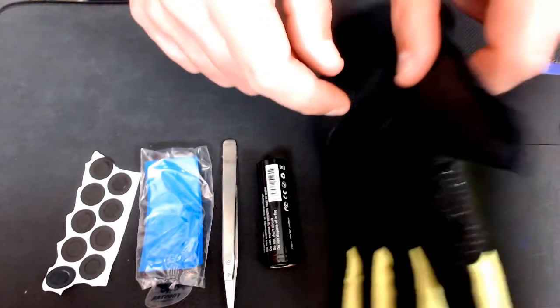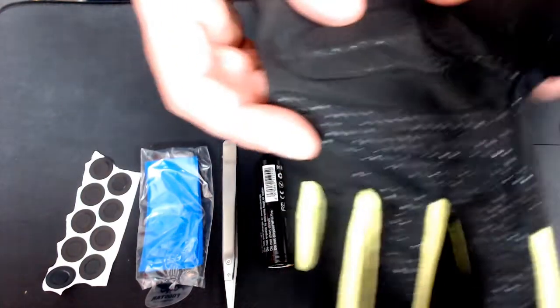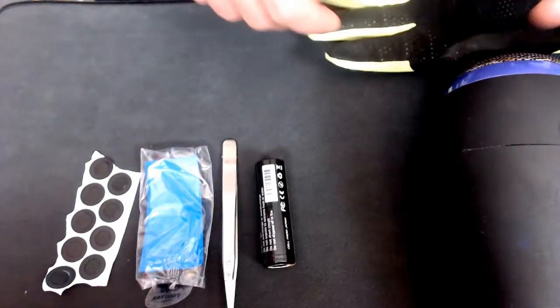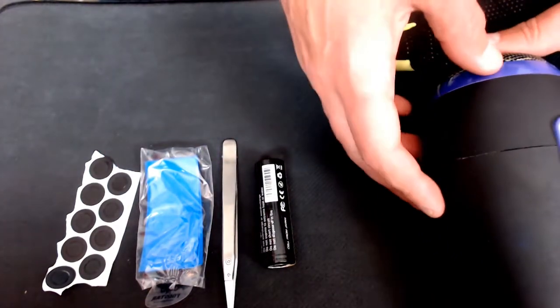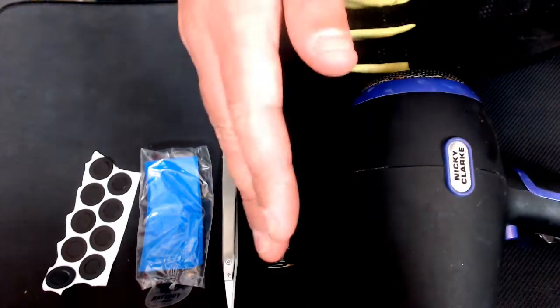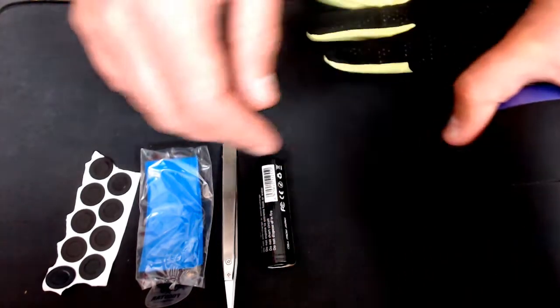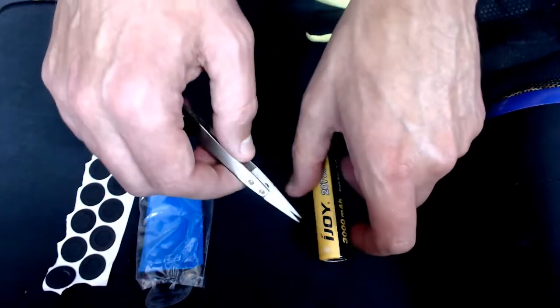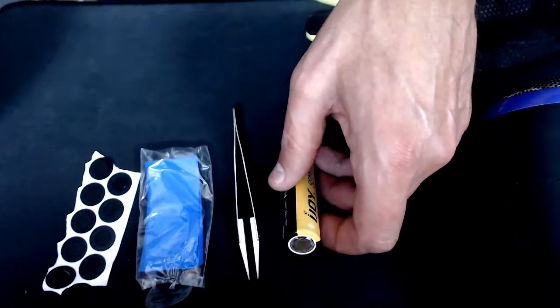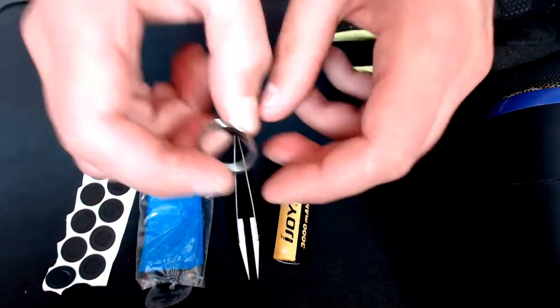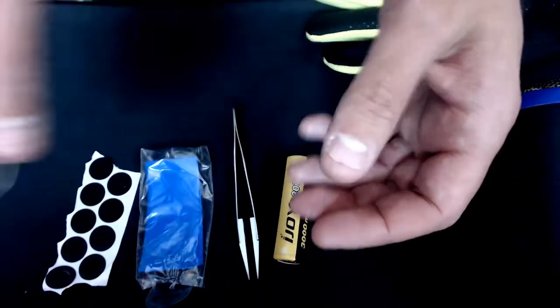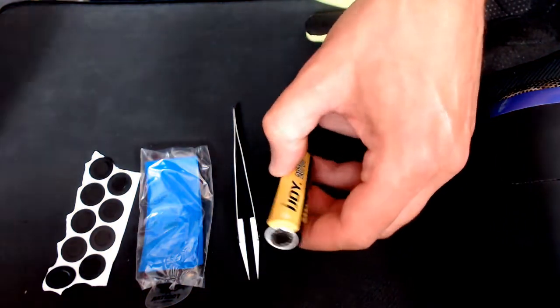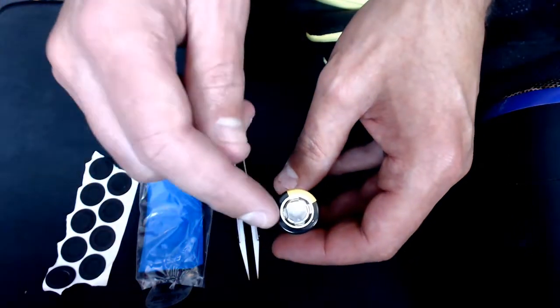Right, so before we start, let's look at what we need. I like using a heat resistant glove because I like to get my hair dryer nice and hot. We also need a hair dryer - any normal household hair dryer will do. I've got ceramic tweezers here which we use to take the battery wrap off.